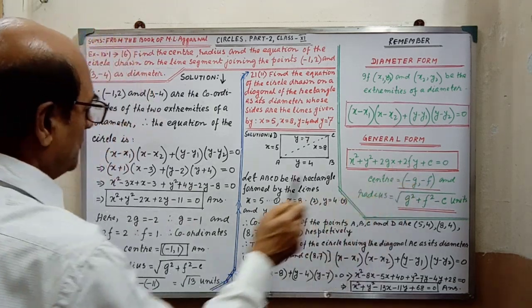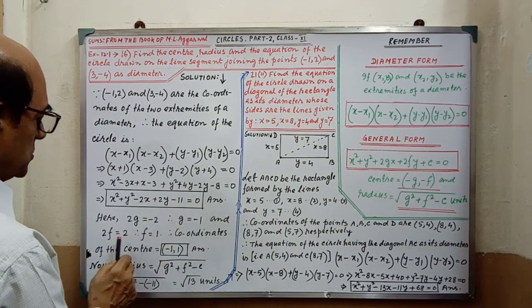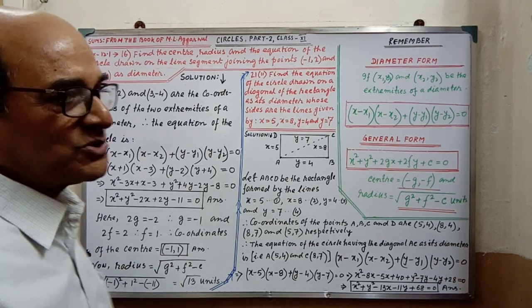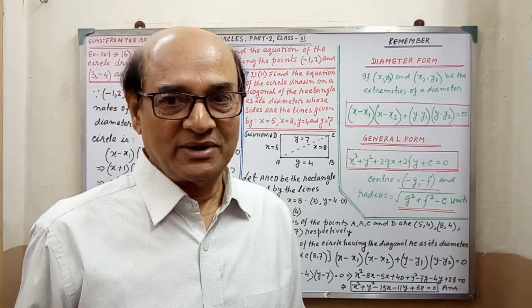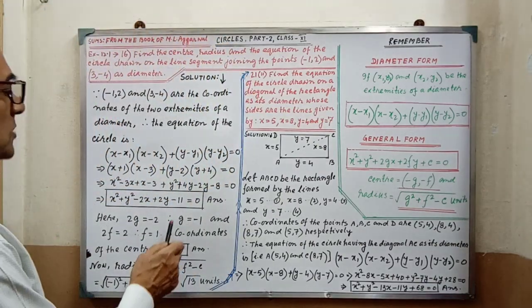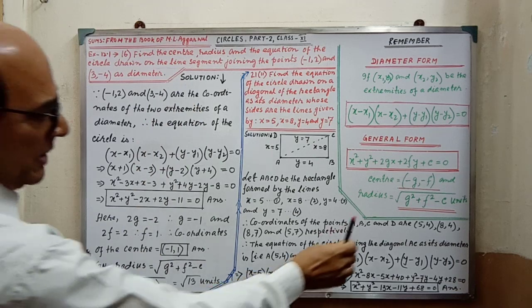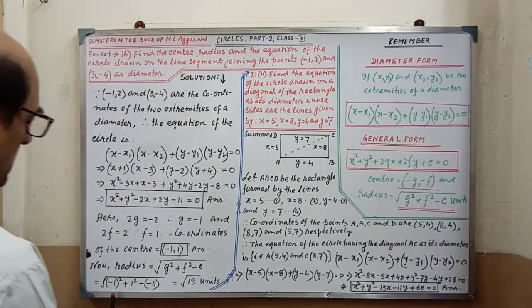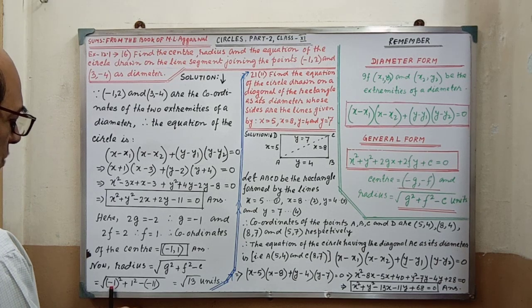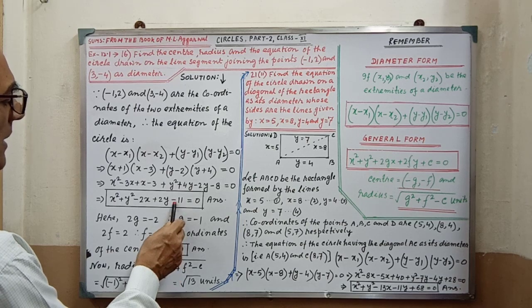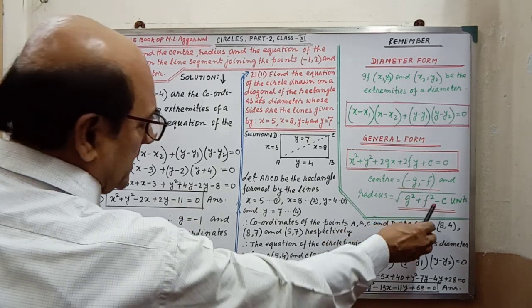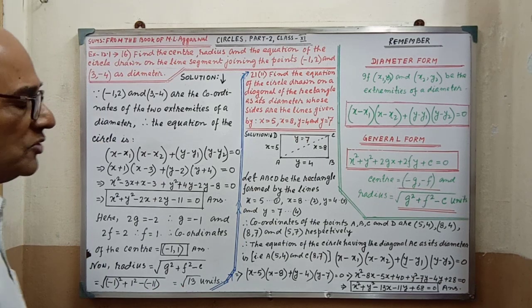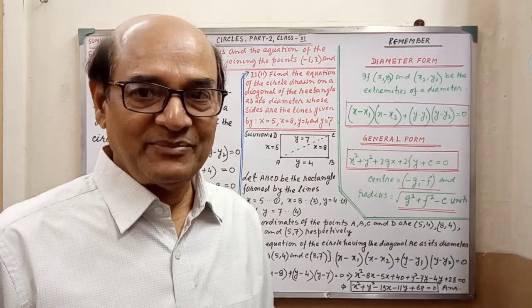For 2fy, in place of 2f here is given 2, so 2f equals 2, therefore f equals 1. Therefore, coordinates of the center are (minus 1, 1). Next, we have to find out the radius. Applying the formula: root over g squared plus f squared minus c units. Here: (minus 1) squared plus (1) squared minus (minus 11), which gives root over 13 units. The sum is completed.